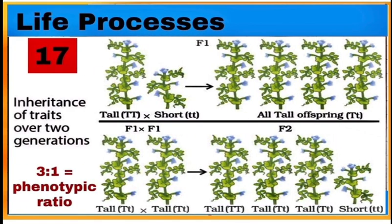This is also showing monohybrid cross between tall and dwarf pea plant. Again, in F1 generation, all tall plants are seen, while in F2 generation, tall and dwarf pea plants appear in the ratio of 3:1.